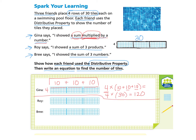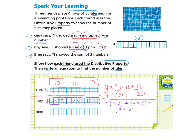When Roy looked at the tiles, he said he showed a sum of three products. Roy saw 4 and 10 and knew that this array was 4 by 10. But then he saw another array, and another one. Roy used the distributive property by taking 4 times 10 and adding it to 4 times 10 and 4 times 10. So he had a sum of three products — product one, product two, and product three.